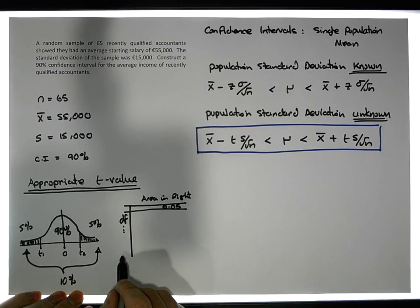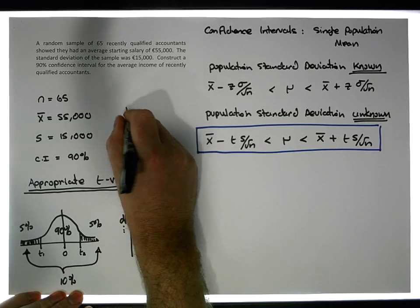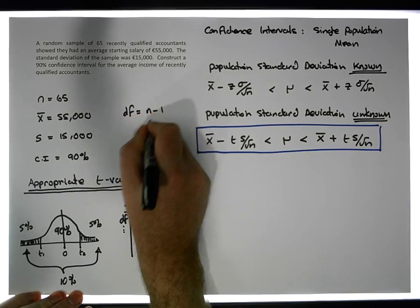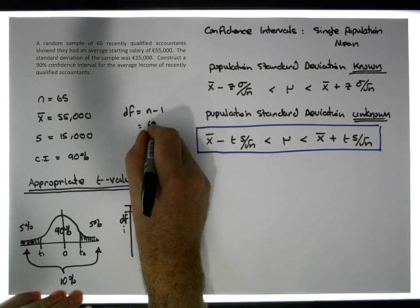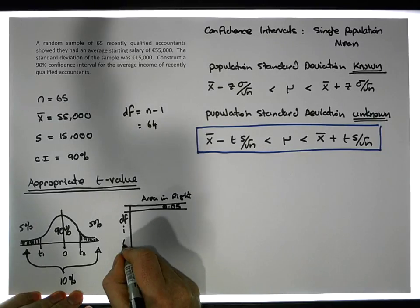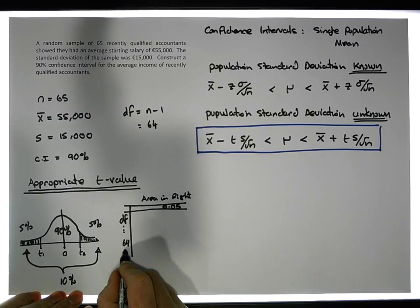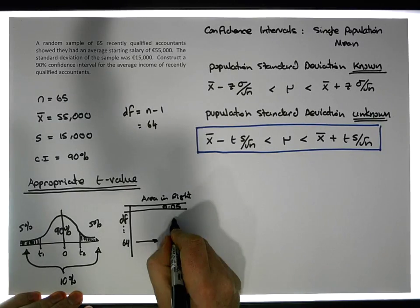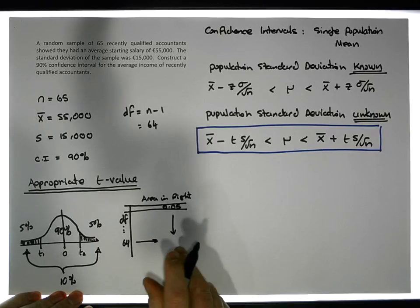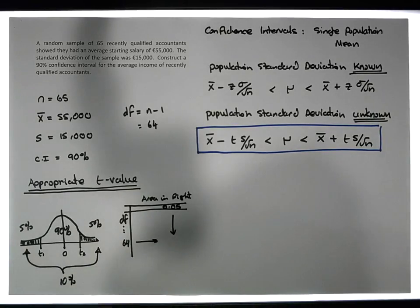In our case, degrees of freedom equals 64. So we're looking for row 64 and under the column 0.05, because we have five percent of the area in the right tail. So the appropriate t-value, when I go to my t-distribution tables...